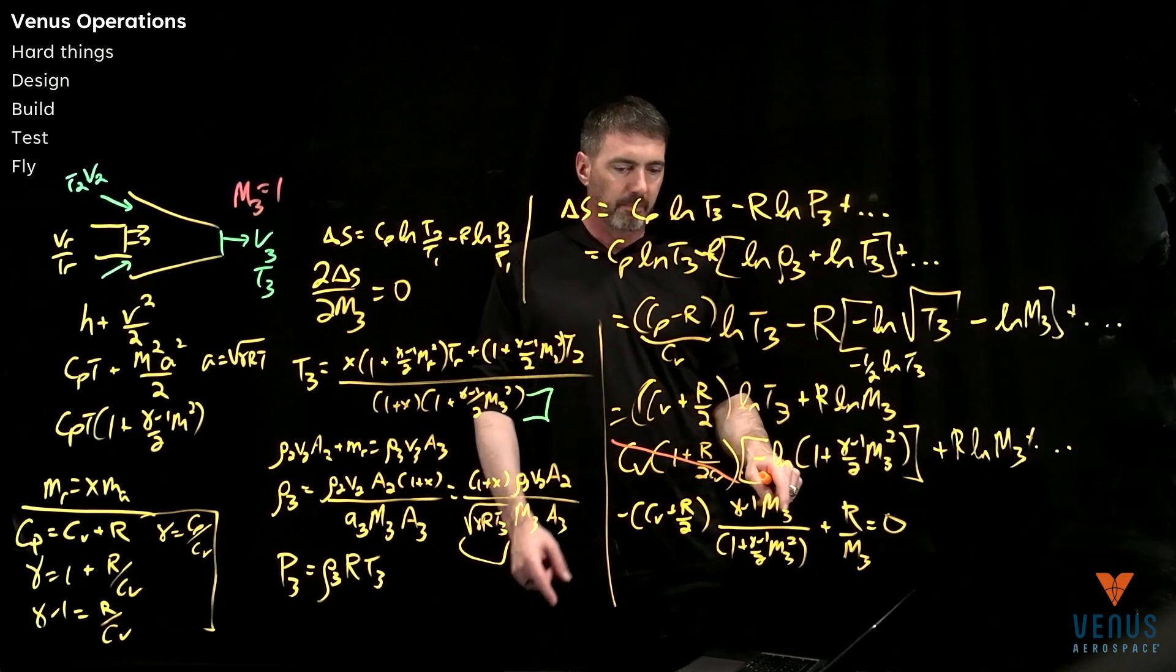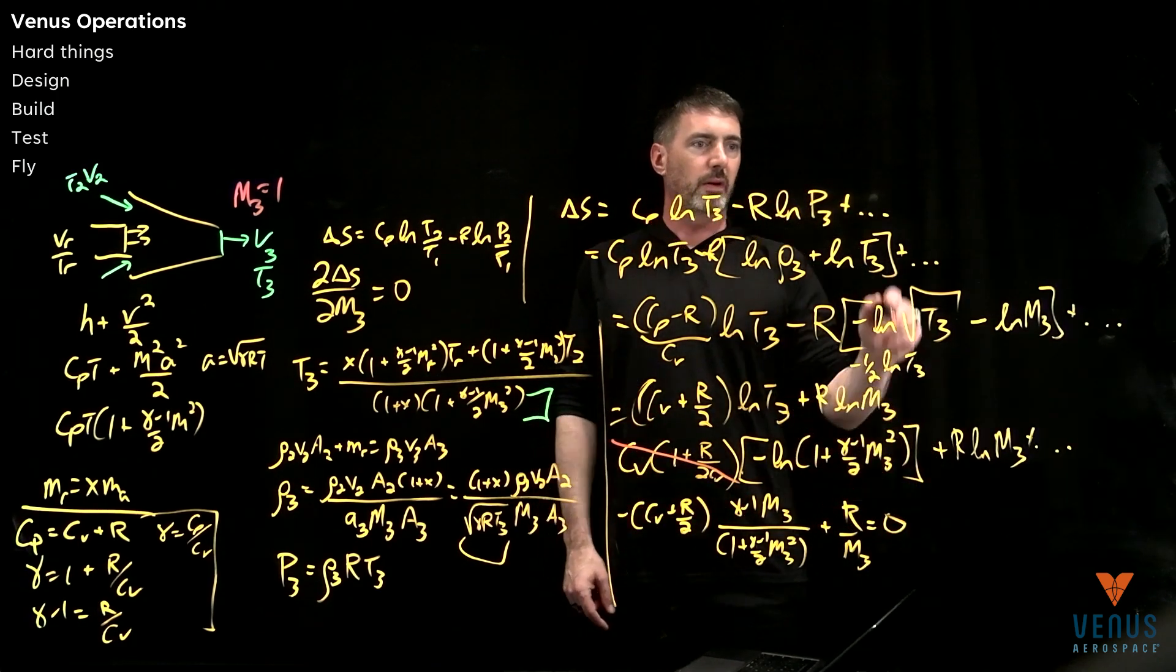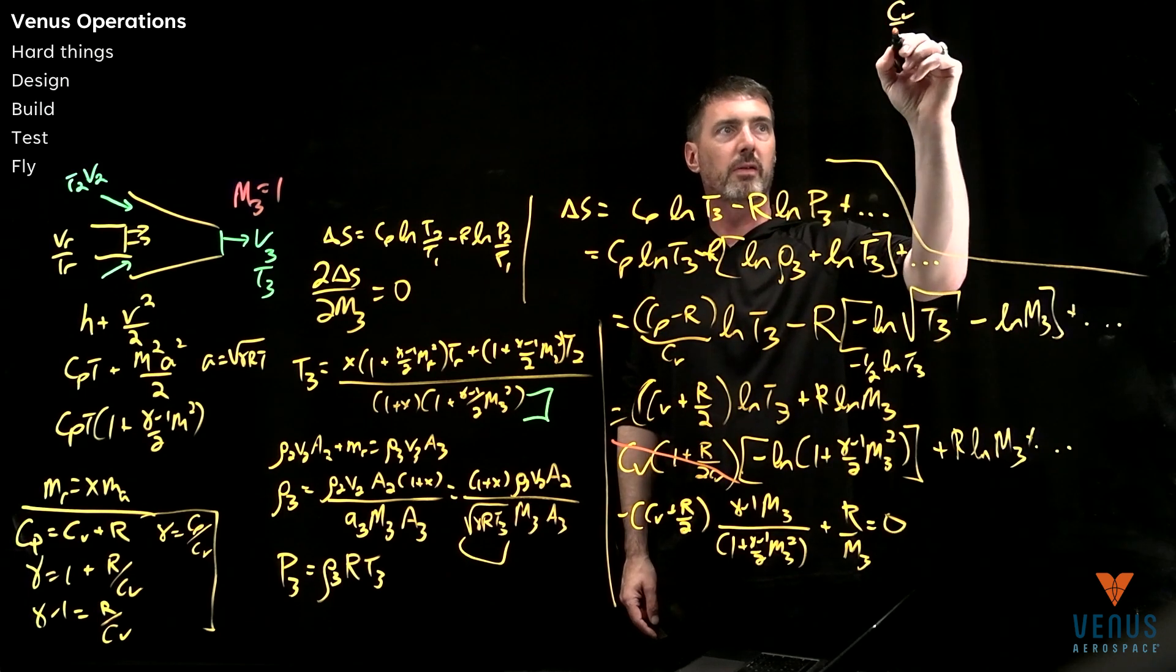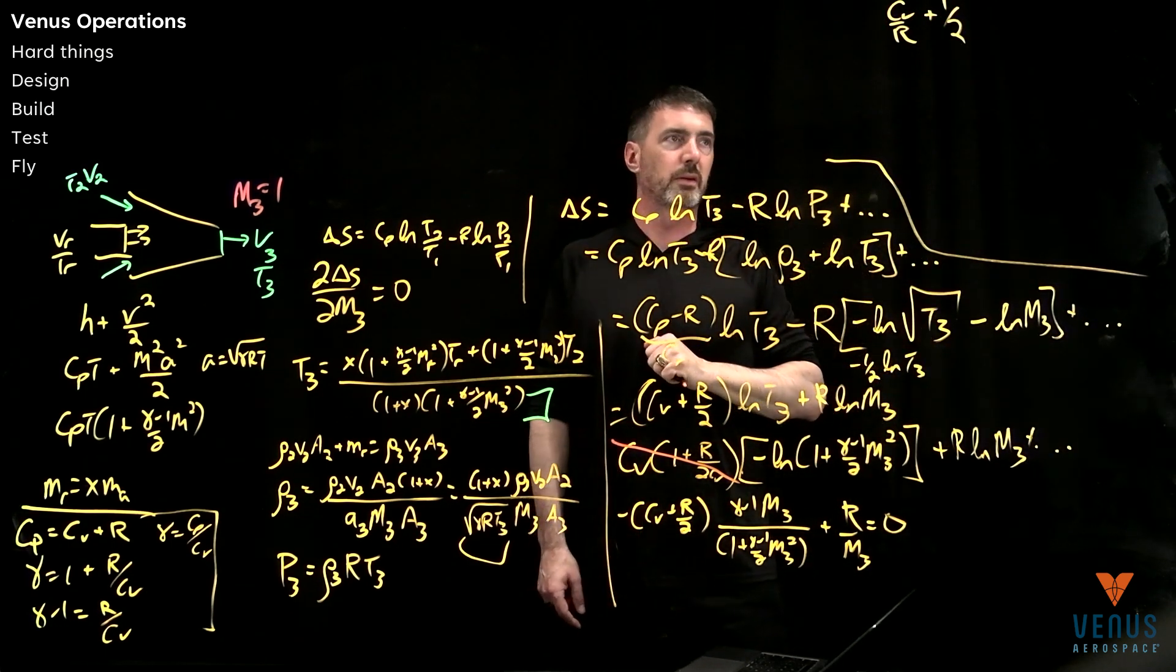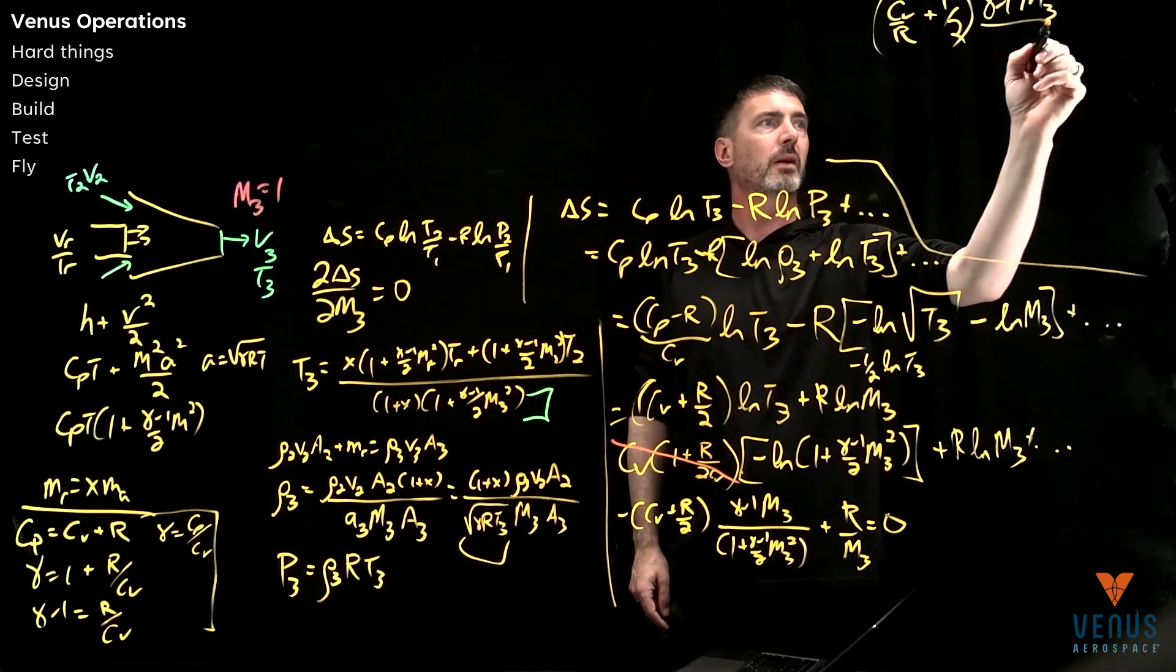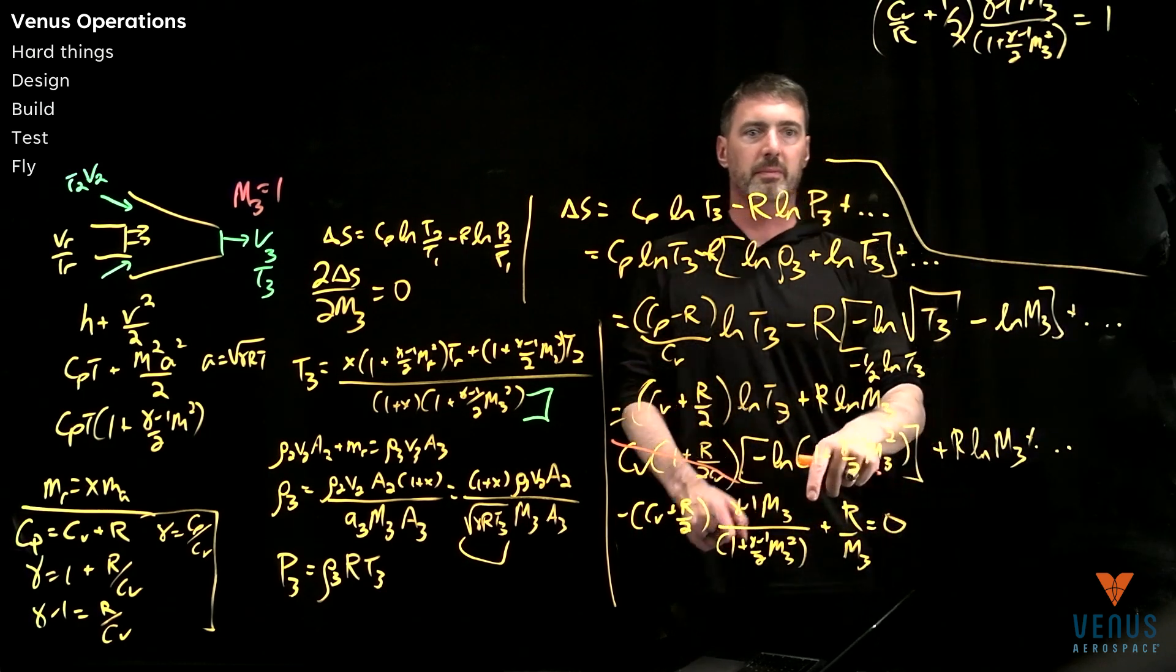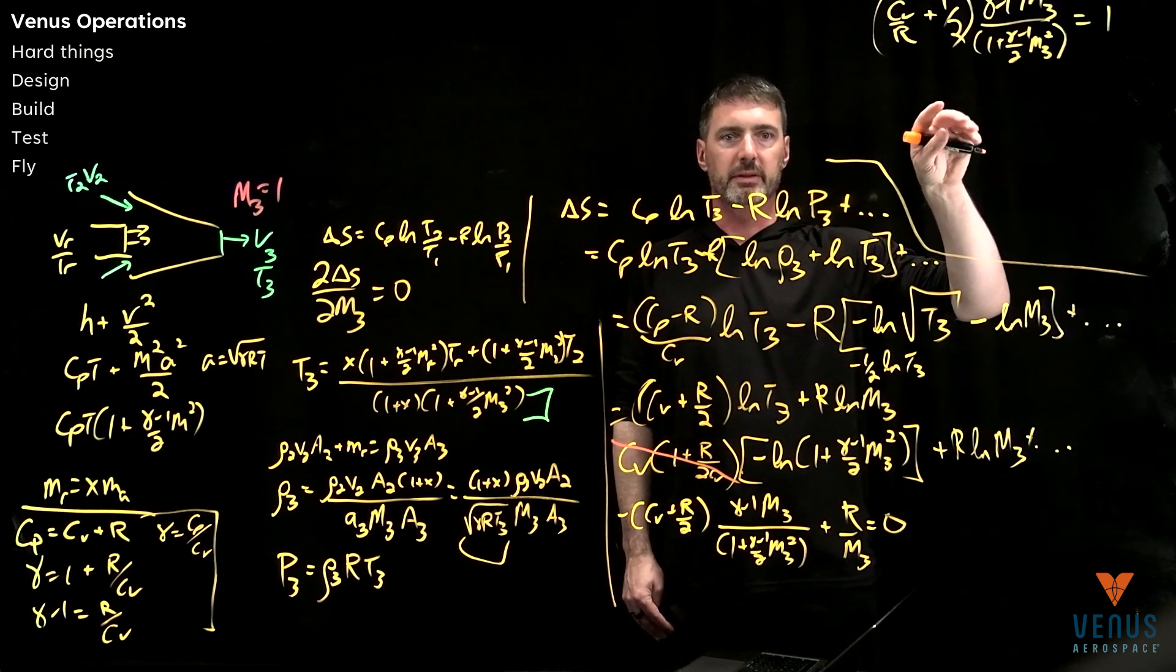So when I move this over to the other side, that'll get a negative so that both negatives will cancel out. And so I'm actually going to move up here to finish out because this is getting a little too low for me. And then we can divide by R. So that's why I didn't want to do that yet. So we actually have a CV over R plus a half. And that is times gamma minus 1 Mach 3 over 1 plus gamma minus 1 over 2 Mach 3 squared. And that's equal to 1. And I picked up the squared from this term coming over.